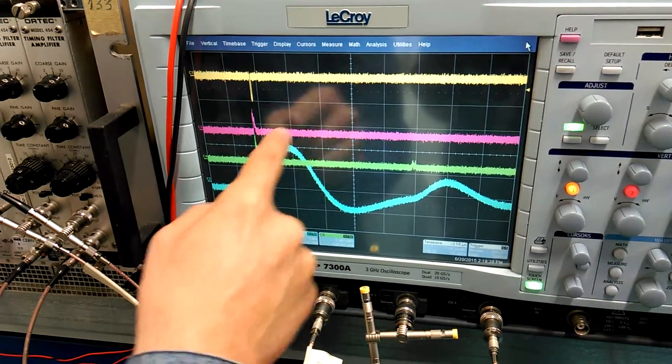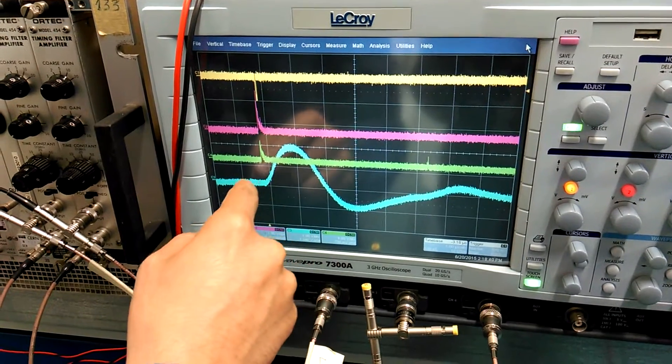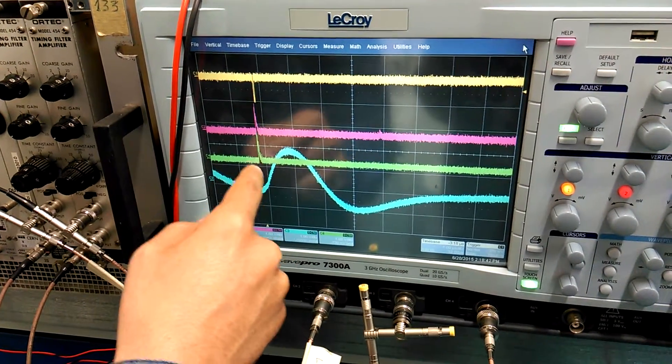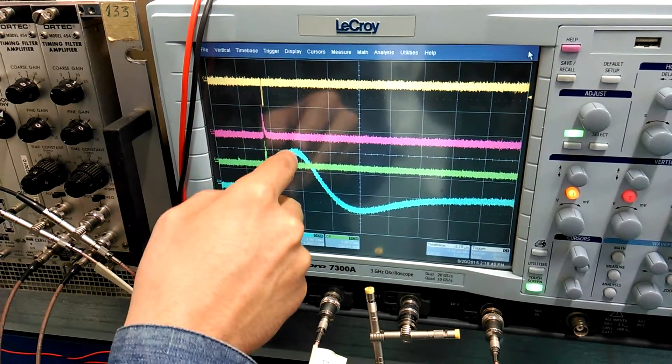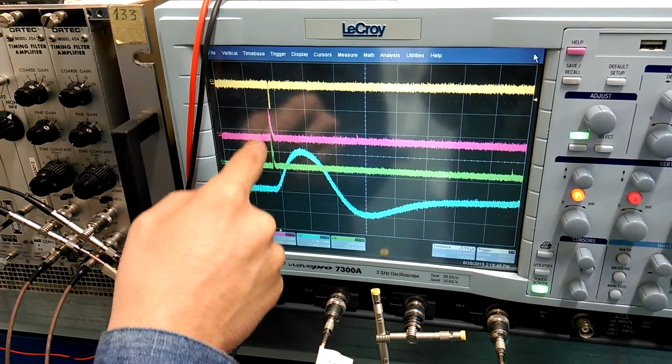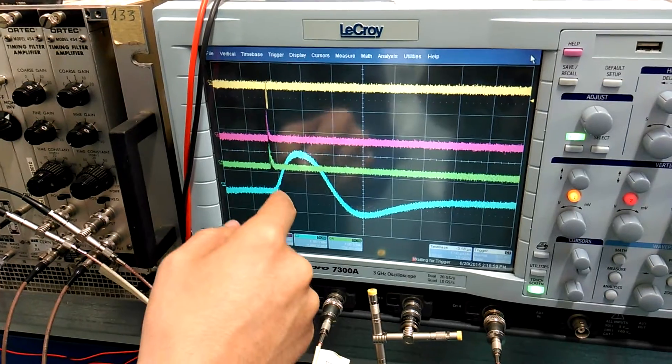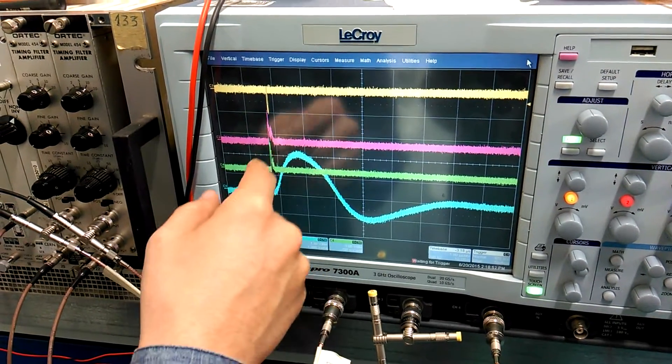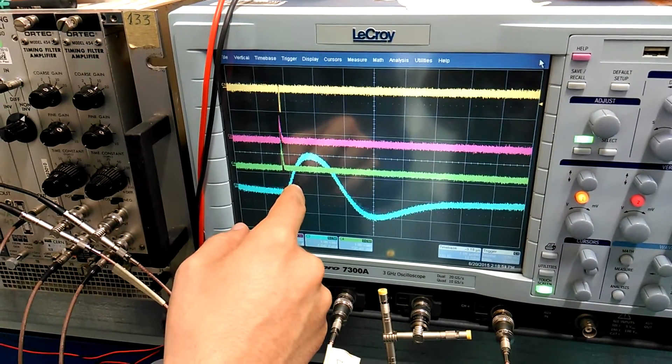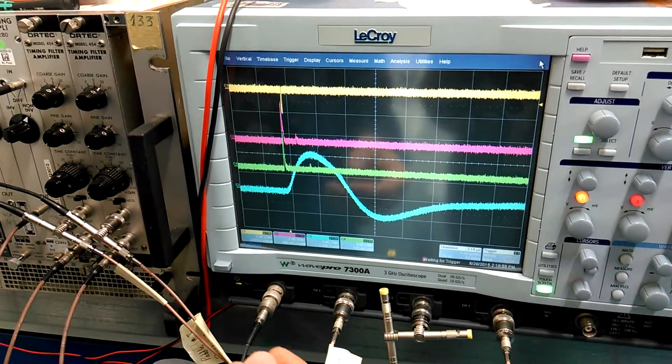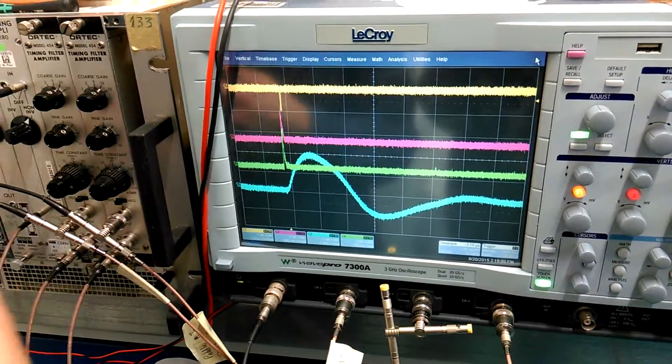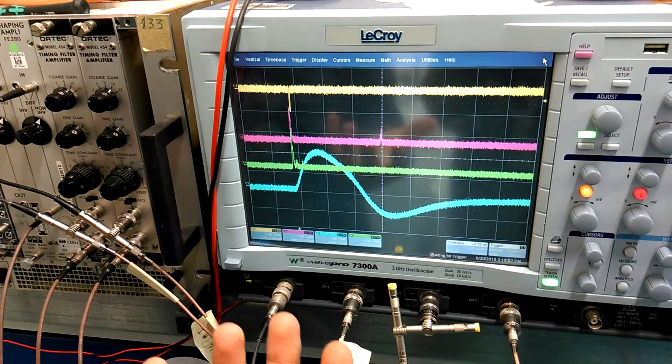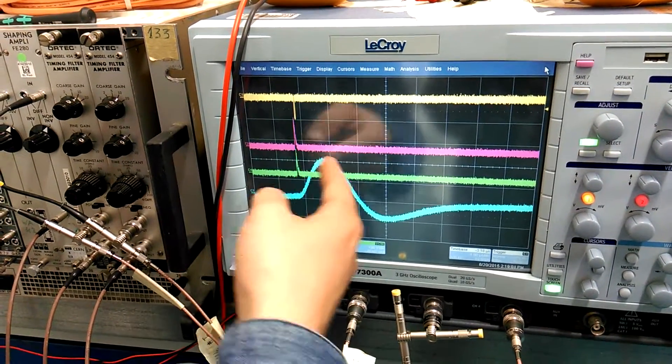This signal has information about the original one. The amplitude of that signal is proportional to the integral of the original one. We will use that signal in our electronics to convert the original charge into digital representation. The ADC will process that signal.